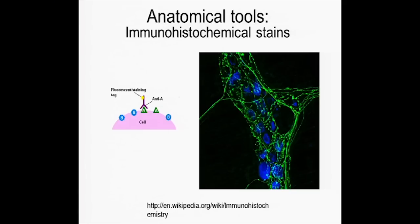Sometimes they can even connect that to a fluorescent marker, and here you can see very precisely different proteins in cell bodies. This is probably a blood vessel here. Each of these blues is probably identifying one cell type, and the greens are another protein.